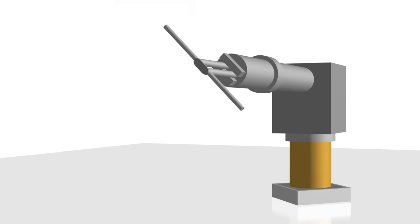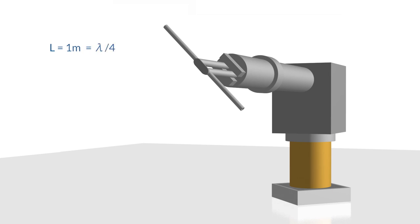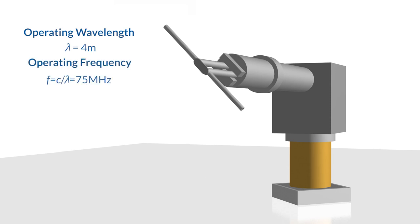The arms themselves are each one meter long. We want to operate this dipole at a frequency such that the free-space wavelength equals four times the length of the arms. The dimensions of the arms give us the operating wavelength of interest, and the operating wavelength gives us our operating frequency. At this operating frequency, the skin depth of the metal will be very small relative to the dimensions of the antenna.